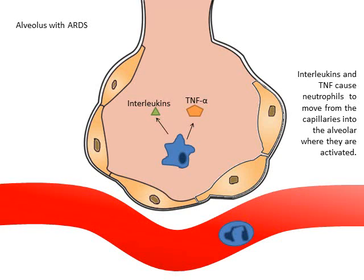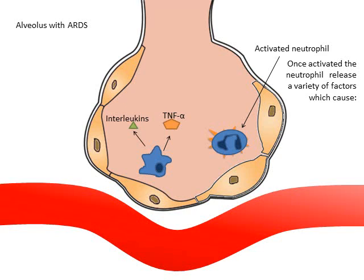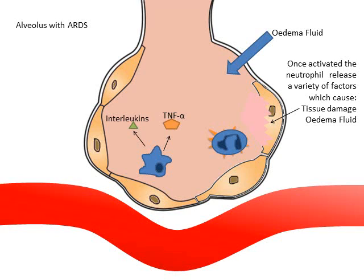Interleukins and tumour necrosis factor cause neutrophils to move from the capillaries into the alveolus where they are activated. The activated neutrophil releases a variety of factors which cause tissue damage, accumulation of edema fluid, the formation of hyaline membrane and inactivation of surfactant.